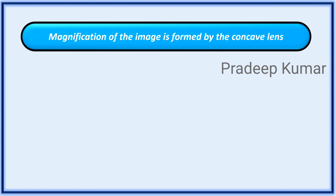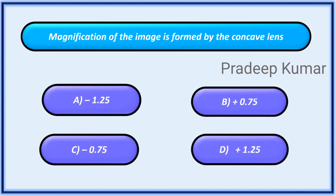Magnification. What is the magnification of the image formed by the concave lens? Options: A. Minus one point two five, B. Plus zero point seven five, C. Minus zero point seven five, D. Plus one point two five.